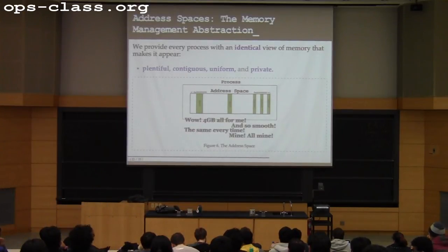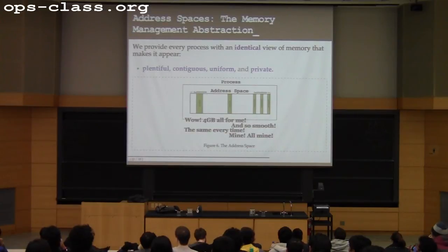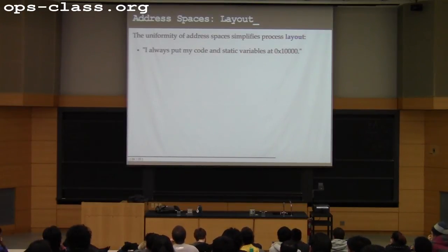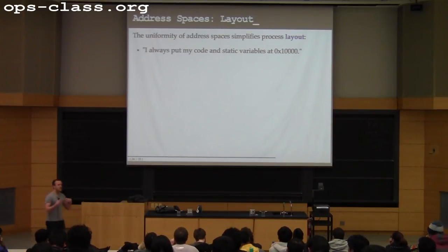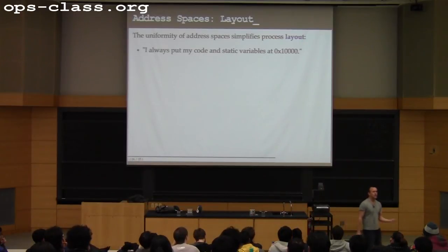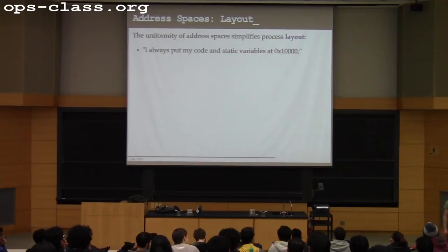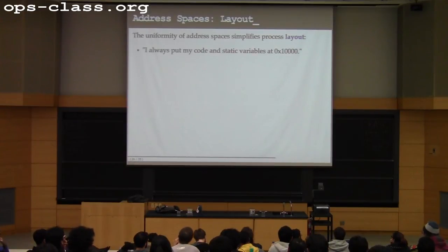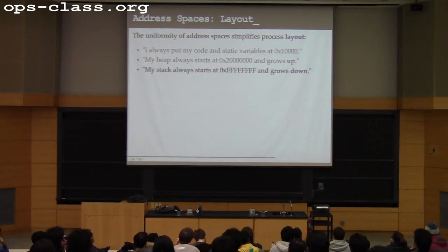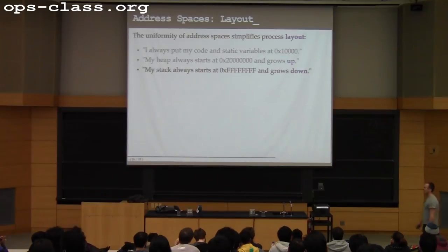Every process gets 4 GB or 2 GB — it's all theirs, looks the same every time, no holes, and is private to their process. The uniformity of address spaces makes process layout very simple: when you compile your process it can organize things the same way every time. Regardless of the machine's memory, whether forked 10 times or running once, every process gets the same abstraction. So it can say: I'm always going to load my code here, the heap always starts at a particular location and grows up, my stack always starts at the very top of the address space and grows downward.